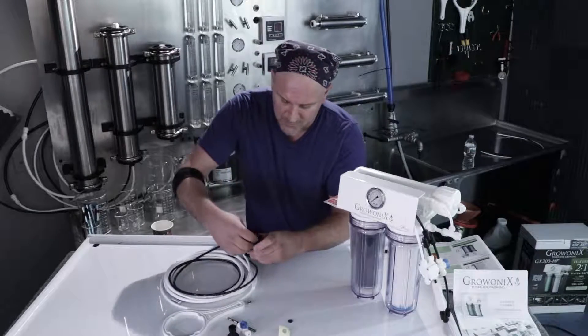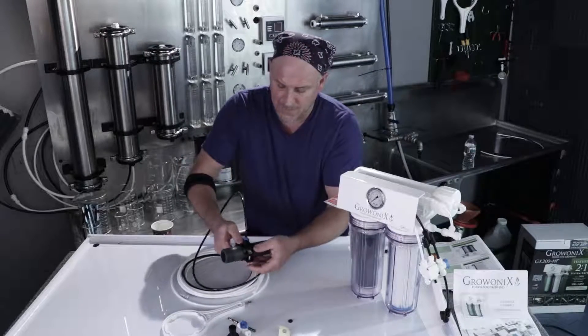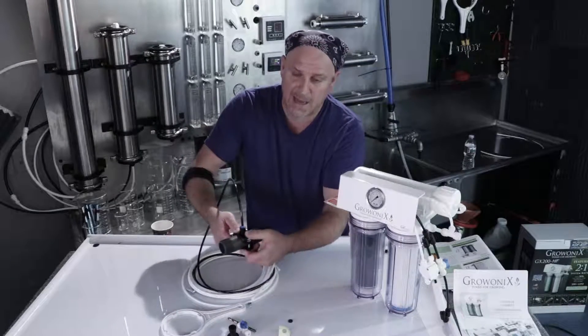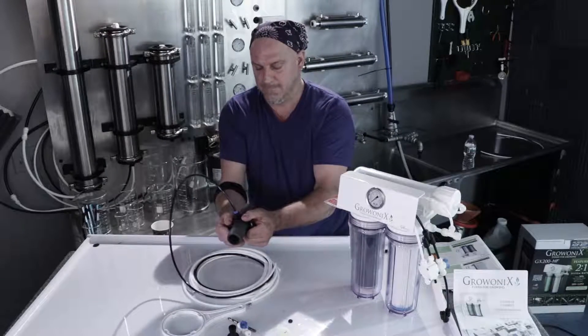And then just assemble the drain saddle, put the nuts on, and tighten them up. And don't over tighten them. There is a gasket there to seal from any leaks. And that's how the drain saddle connects. Real simple.